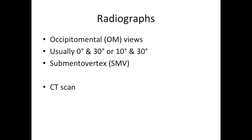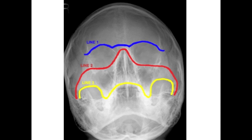Radiographs are essential if a fracture is suspected. A rule of thumb in orthopaedics is to take two views of a fracture at approximately 90 degrees apart. With the face, occipital mental views at 10 and 30 degrees or 0 and 30 degrees usually suffice. Submental vertex views are good at demonstrating the zygomatic arches but some radiographers are reluctant to perform them. Occipital mental views can be difficult to read initially as the facial skeleton and cranium are composed of many bones which superimpose each other, but by applying a few simple rules you will soon be comfortable with them.